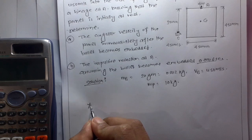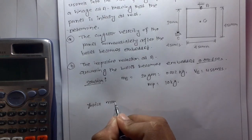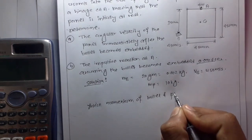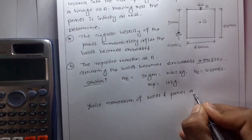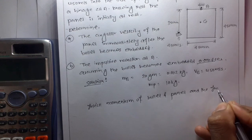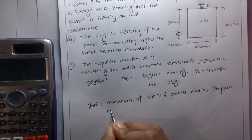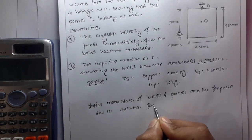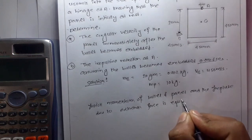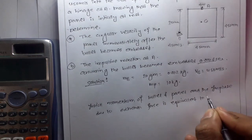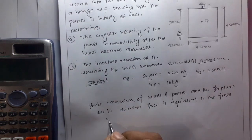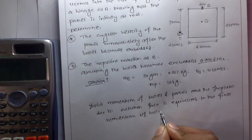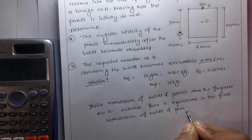First, the initial momentum of the bullet and panel, plus the impulse due to external force, is equivalent to the final momentum of bullet and panel.